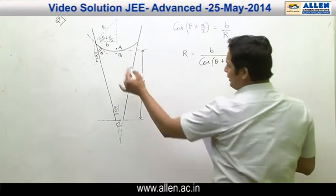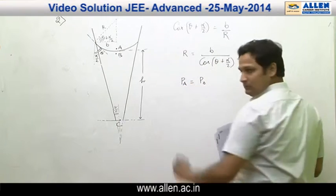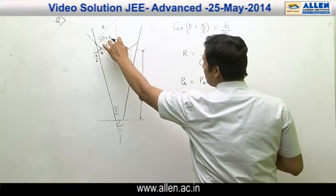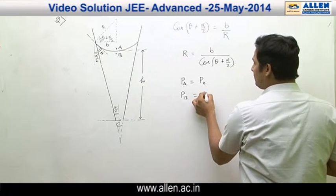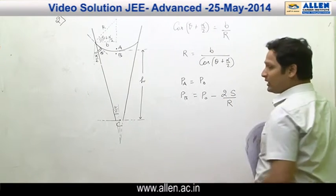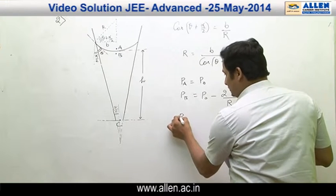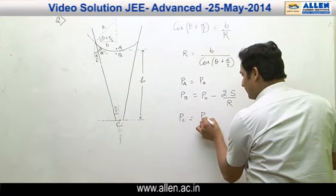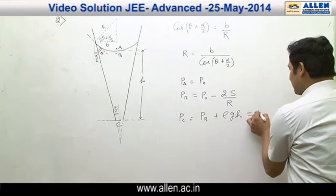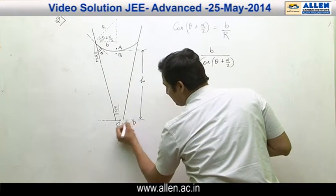We note some reference points. At point A, pressure is atmospheric pressure P₀. At point B, as we move from the concave to the convex side pressure decreases, it becomes P₀ minus 2S divided by R, where S is surface tension and R is the radius of curvature. At point C, pressure equals pressure at B plus ρgh, which equals P₀ since points C and D are at the same level.